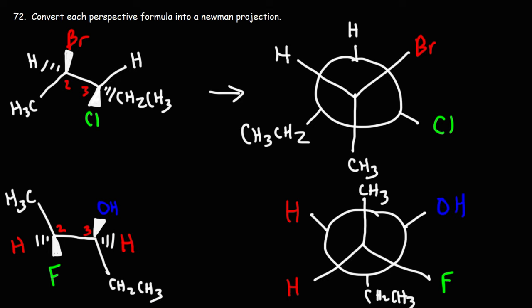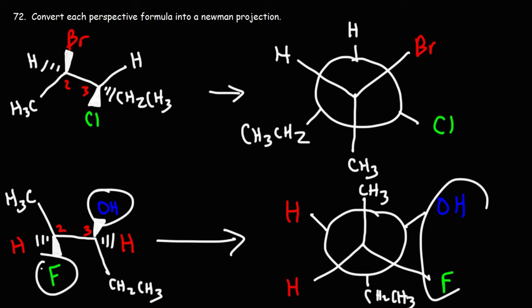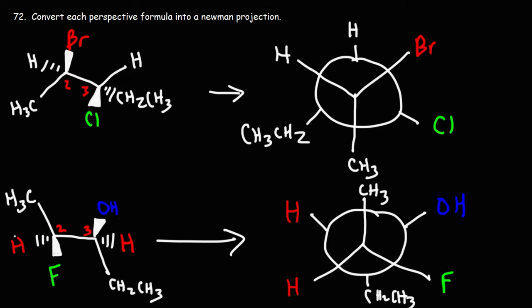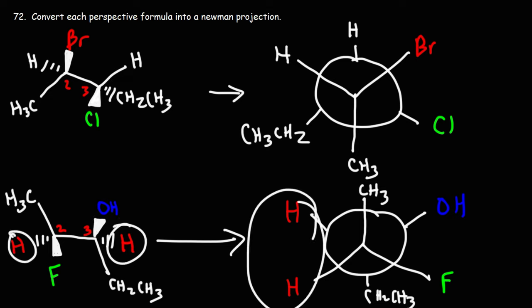So that's how we can convert this particular perspective formula into a Newman projection. Remember: if it's on the wedge, put it on the right. If it's on the dash, put it on the left side.